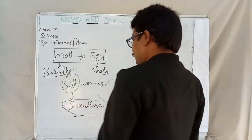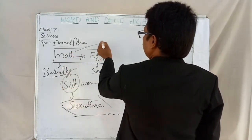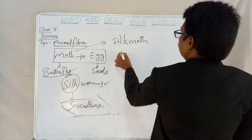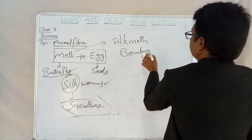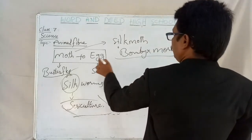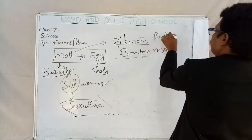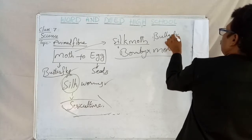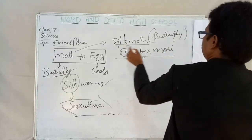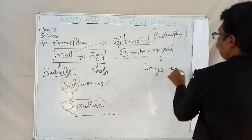The scientific name of the silk moth is Bombyx mori. Remember students — the silk moth looks like a butterfly, do not think otherwise. The scientific name of silk moth is Bombyx mori, and Bombyx mori lays eggs.